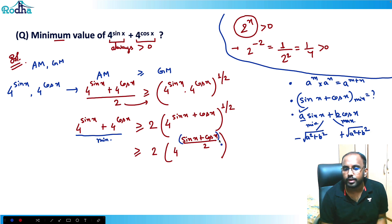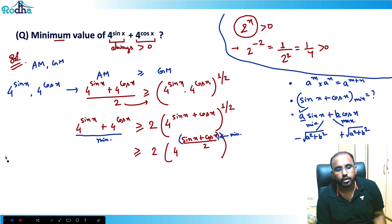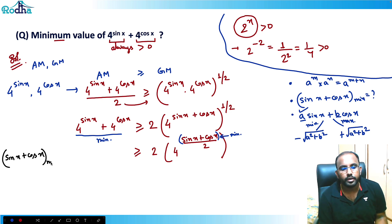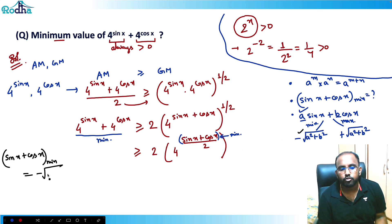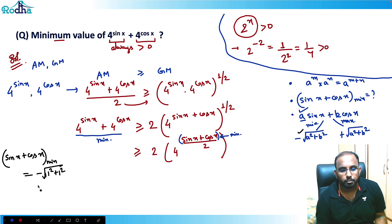For sin x + cos x, a = 1 and b = 1, so the minimum value is −√(1² + 1²) = −√2.